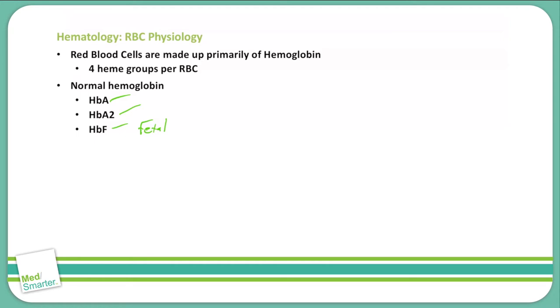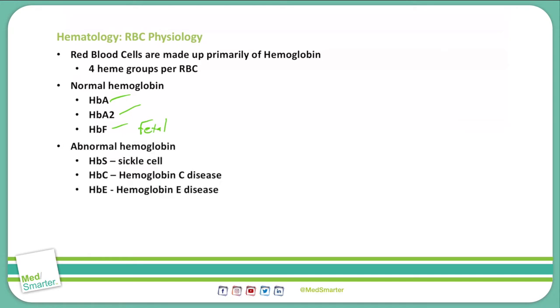We also see some abnormal types of hemoglobin, specifically the sickle cell hemoglobin HbS, hemoglobin C, and hemoglobin E disease, which give us HbC and HbE.